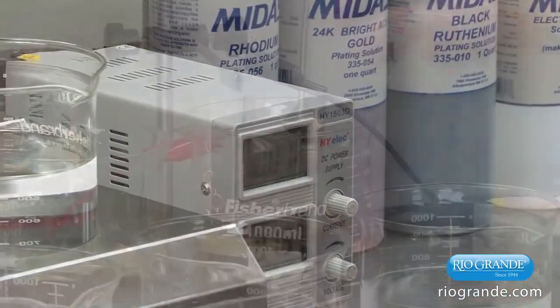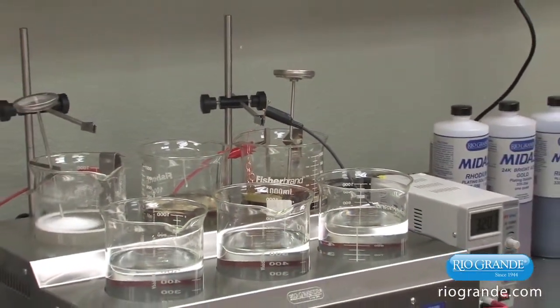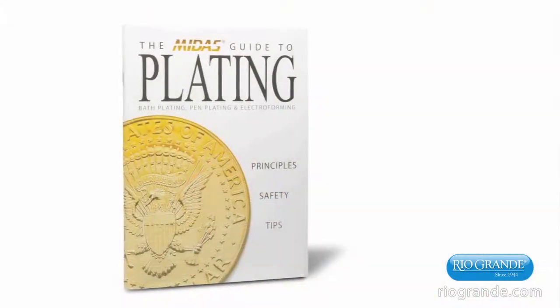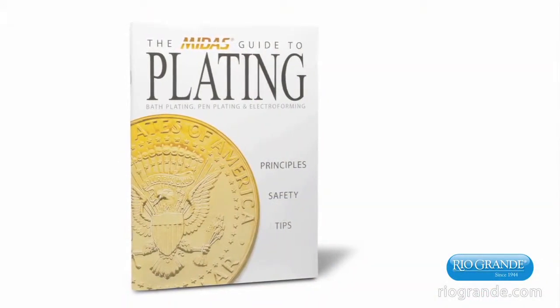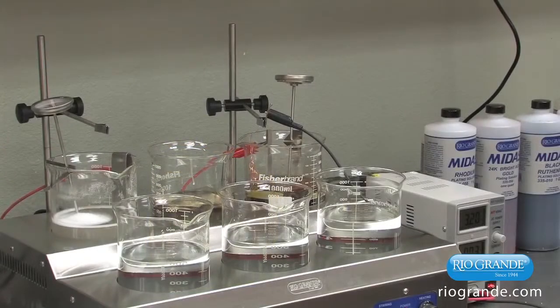For those who want the classic glow of gold, there are plating solutions in many shades and carats. Preparation is the same and exact voltages and times can be found in the MIDAS plating guide for each solution you use. Again, a nickel preplate is necessary to prevent the base metal of your piece from tarnishing through the layer.